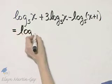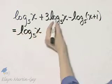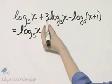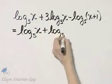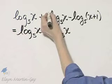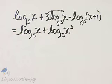Now let me write my first term down, log base 5 of x. This coefficient of 3, I'm going to rewrite this as log base 5 of x raised to a power of 3. That's by a property of logarithms.